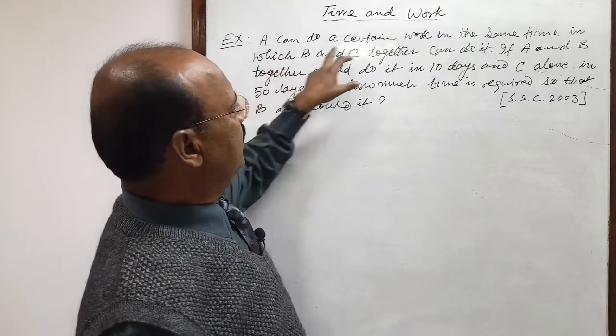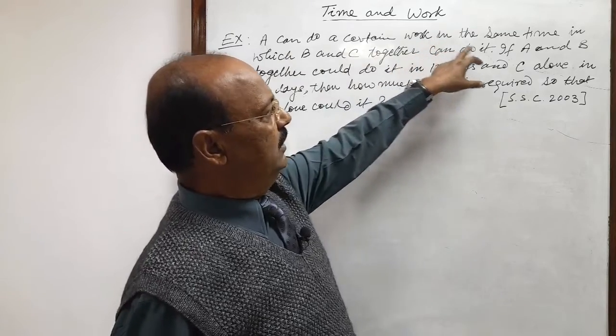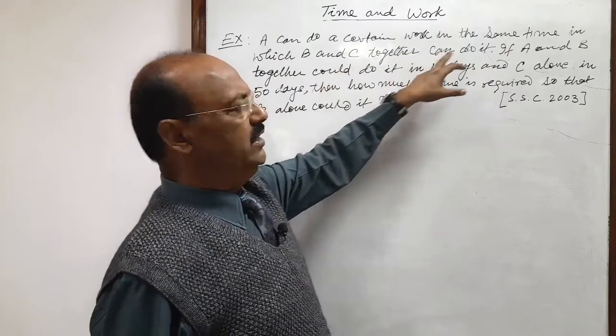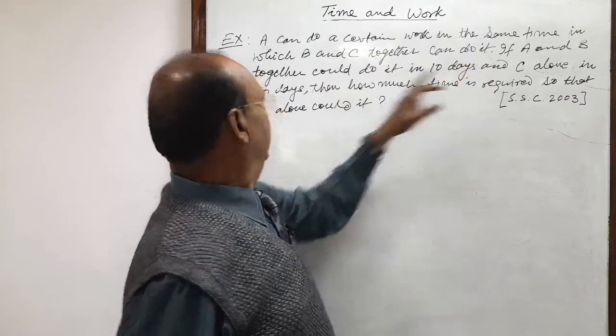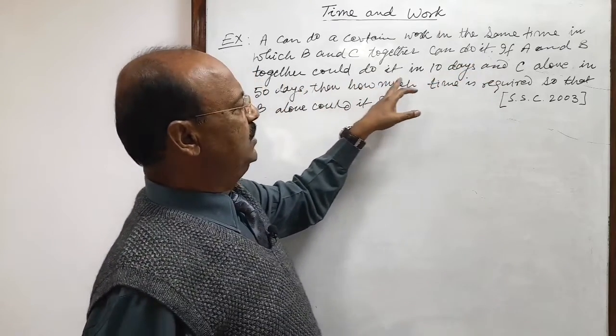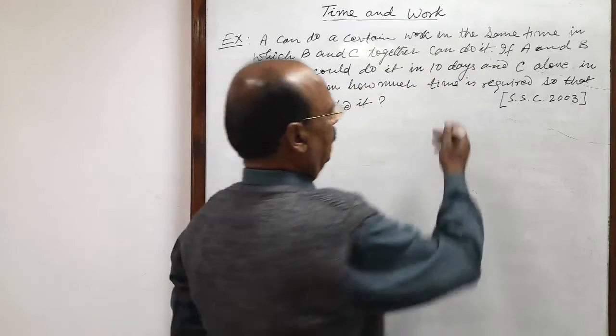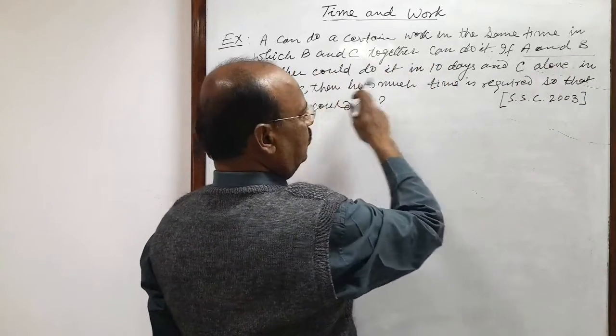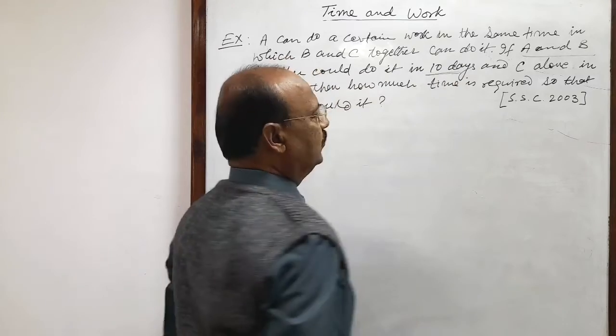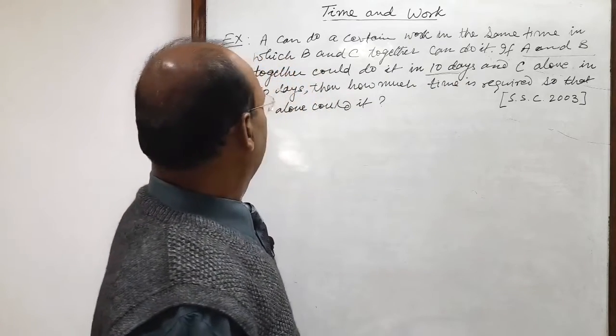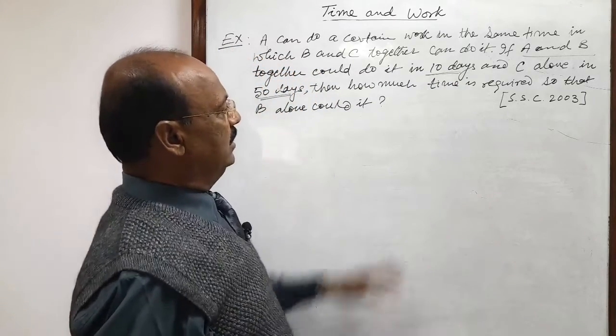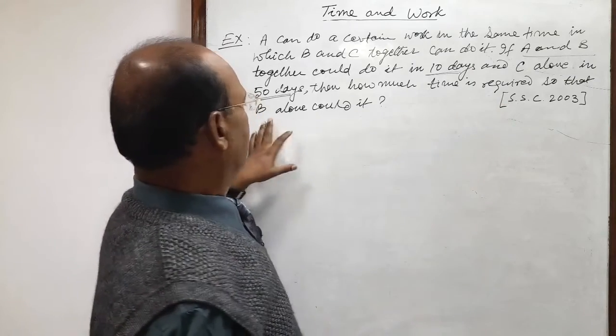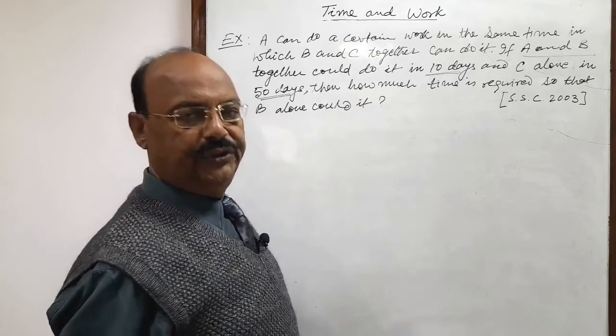Here question is: A can do a certain work in the same time in which B and C together can do it. If A and B together could do it in 10 days and C alone in 50 days, then how much time is required so that B alone could do it?